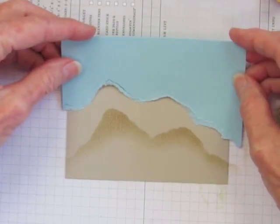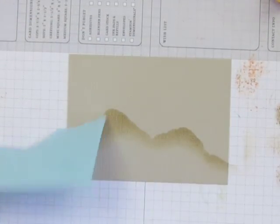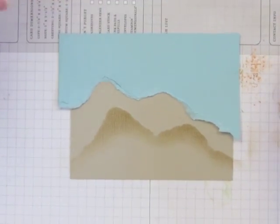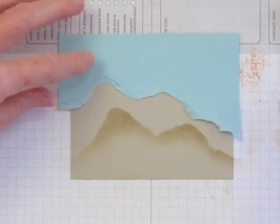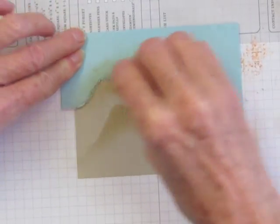Now I made a second stencil for mountains that are further away and I'll put those in position. And because they're further away I want the ink even lighter so they'll look like they're off in the distance.